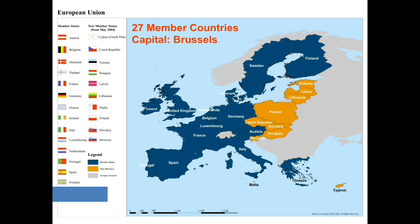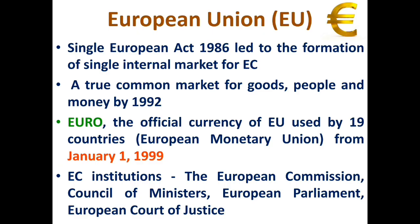The EU consists of 27 members following the expulsion of the United Kingdom through Brexit. Its capital is Brussels, which is also the capital of Belgium. The Euro, the official currency of the European Union, was introduced from January 1, 1999, with 19 members forming the European Monetary Union, also known as the Eurozone. The Single European Act of 1986 led to the formulation of a single internal market. EU institutions include the European Commission, Council of Ministers, European Parliament, and European Court of Justice.